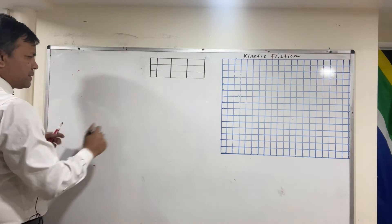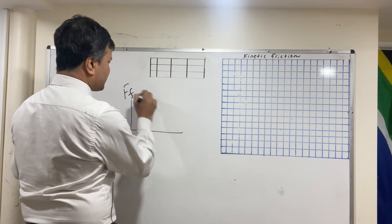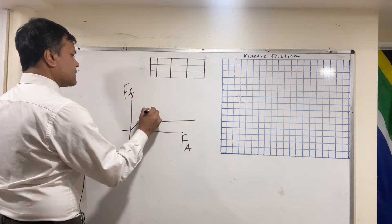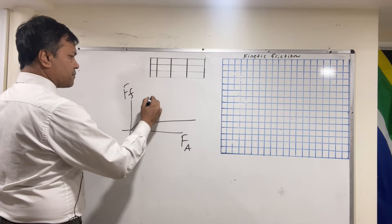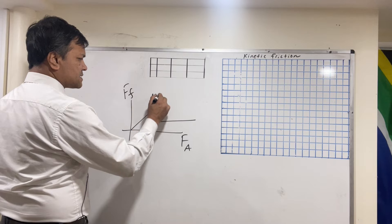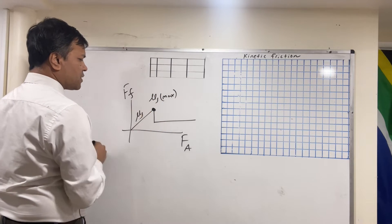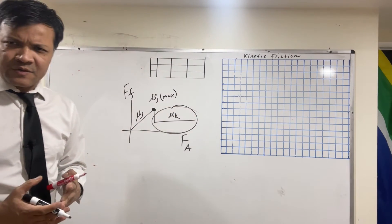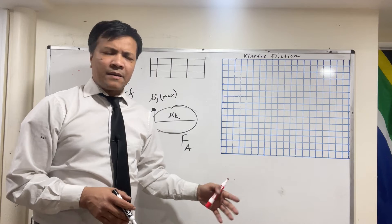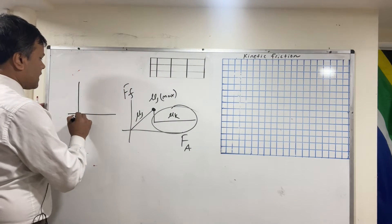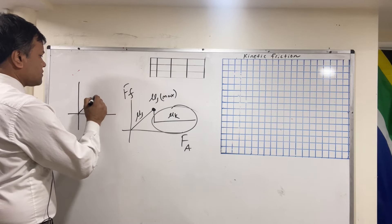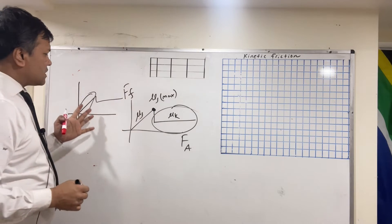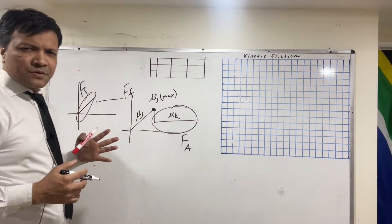You know the friction graph — if you look at it, you see F_f (friction force) and F_applied. This is how a friction graph looks. This point here is the maximum static friction, F_s max, with coefficient μ_s, and this is μ_k. We're going to focus on kinetic friction by changing the mass. The static friction part we did last time, so now we're just focusing on kinetic friction.